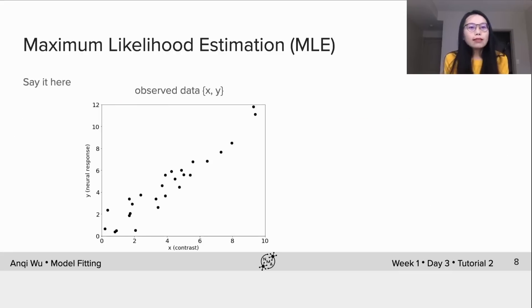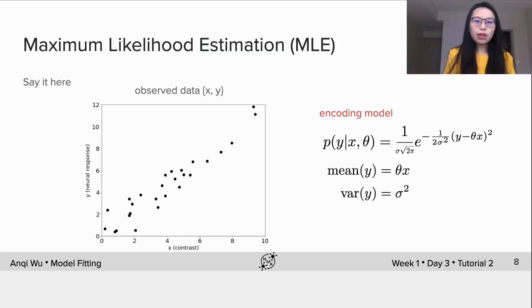Okay, now we have already shown how the distribution of p(y|x, theta) looks. Then the problem we try to solve is, given these observed x and y, we have the assumption that the encoding model from x to y would be this Gaussian form, then what is the theta that leads to the best fit of the model to the data.